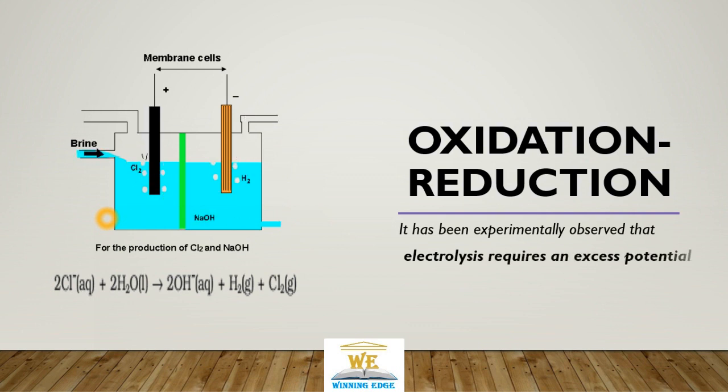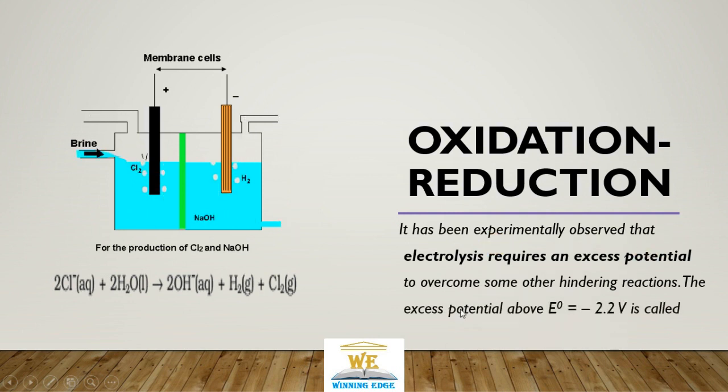During these electrolytic methods, we have experimentally observed that excess potential is needed to overcome certain hindrance reactions. So we have to supply potential from external circuit higher than 2.2, which is called overpotential. Overpotential is the excess voltage that has to be applied across electrodes to reduce or oxidize species into concentration.